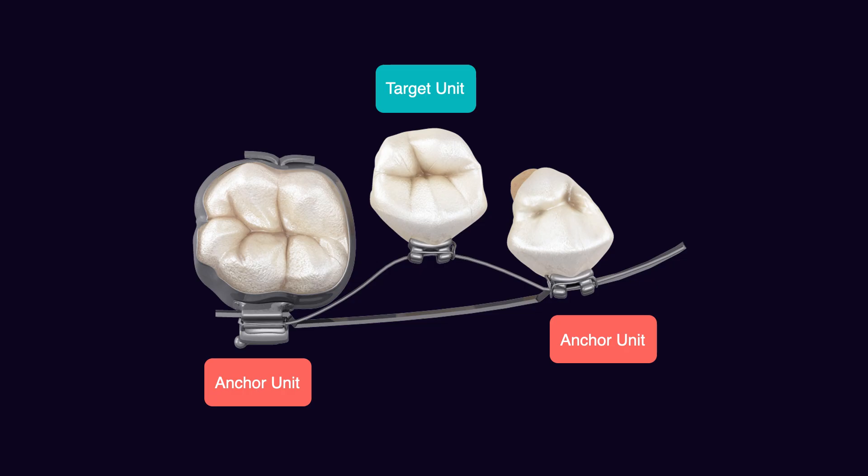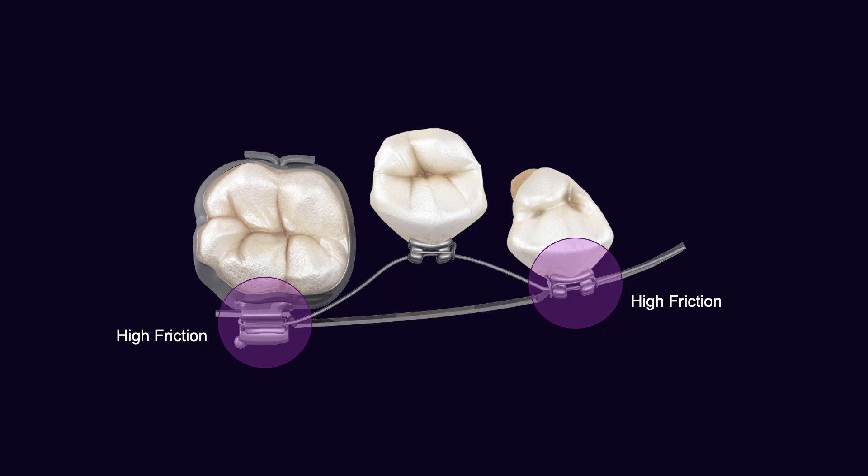Regarding overlay wires: any time we have a tooth that is significantly away from the main arch, we try to bring that tooth using a two-wire setup — one that preserves or controls the anchor units on both sides of the target unit, and one attached to the target unit to produce the force system. The wire attached to the target unit usually has a low load deflection rate, while the wire attached to the anchor unit usually has a high load deflection rate.